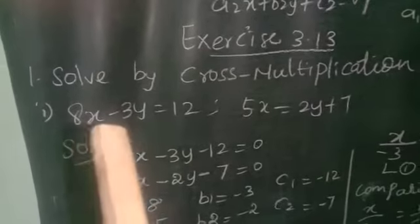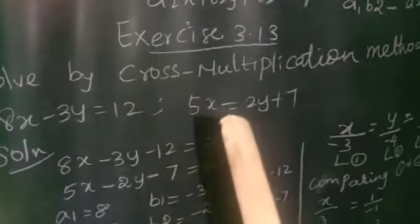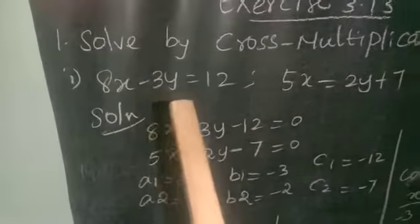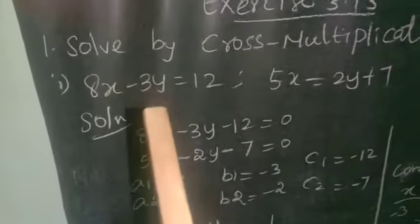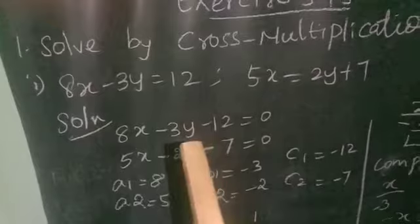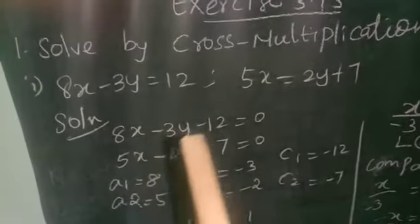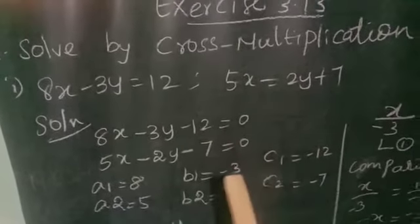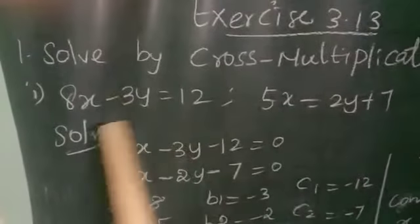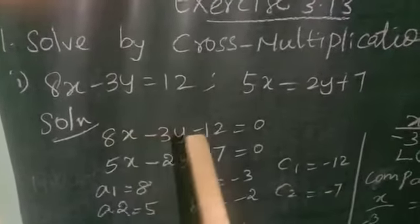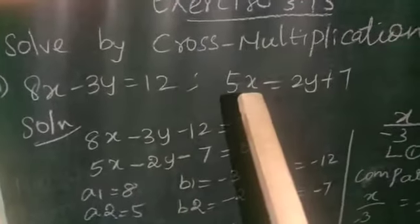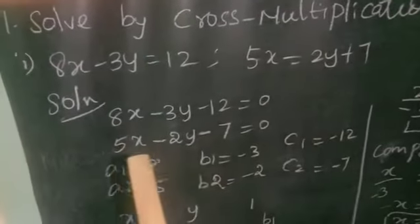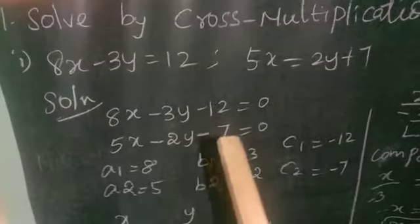The given sum is: 8x minus 3y is equal to 12, and 5x is equal to 2y plus 7. We have to find the solution. First, we write the standard form of each equation. The first equation becomes 8x minus 3y minus 12 is equal to 0. The second equation, 5x equals 2y plus 7, becomes 5x minus 2y minus 7 is equal to 0.